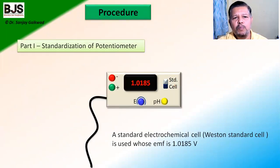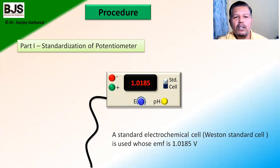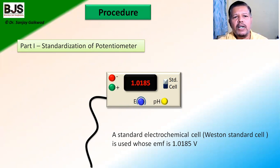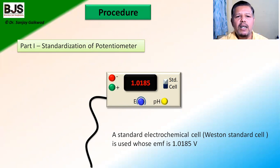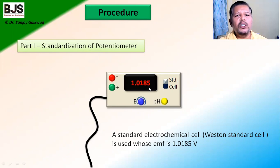In the procedure, the first part is the standardization of the potentiometer, because every instrument should be standardized first and then we can compare with the standard solution. In standardization of the potentiometer, we use a standard cell, and when moving the knob to 'standard,' we should observe 1.0185 volts on the display — then the instrument is standardized.